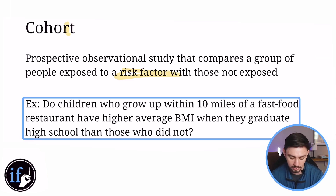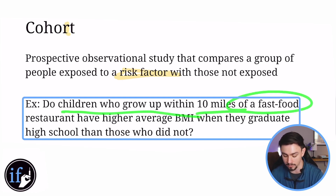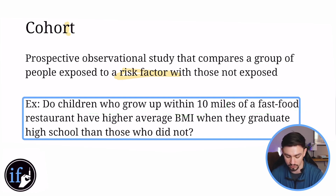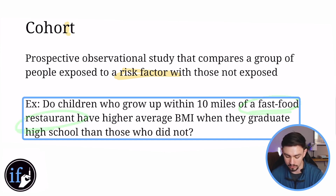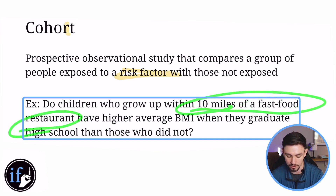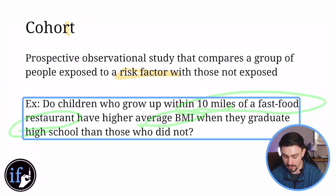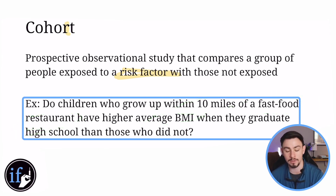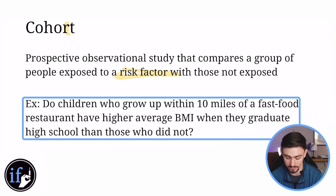A good example of a cohort study would be: are children who grew up within 10 miles of a fast food restaurant heavier on average when they graduate high school than those who did not? The proximity to a fast food restaurant is the risk factor. That's a cohort study — you're comparing those two groups.